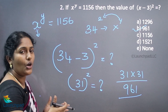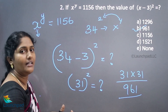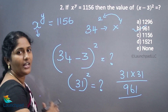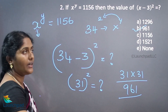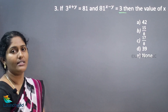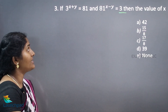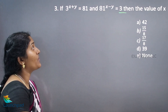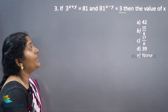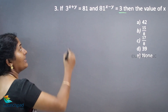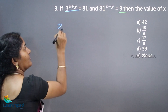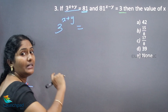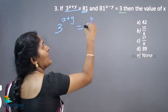We learn the laws of surds and indices, and based on these laws we can apply them to each and every question. Your next question is: if 3 to the power of x plus y is equal to 81, and 81 to the power of x minus y is equal to 3, then the value of x is?